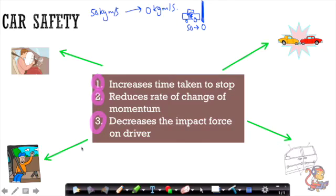So a few safety features that we've put into cars nowadays will increase the time that it takes for the car to stop. Even if it increases it by a fraction of a second, it will still be really important. And this reduces the rate of change of momentum.